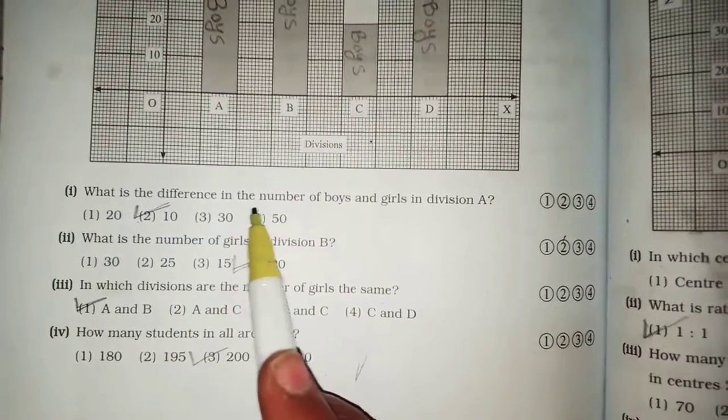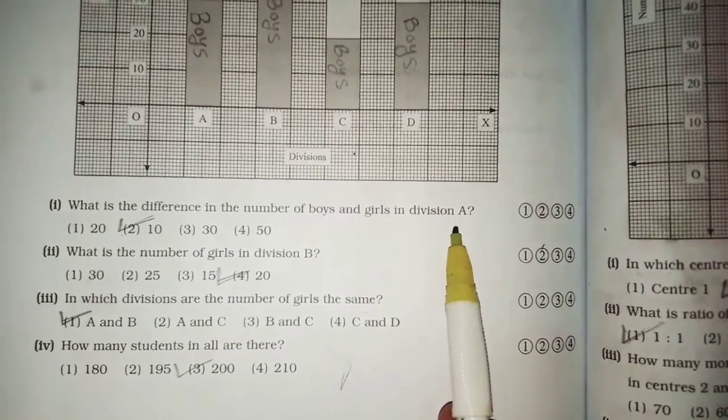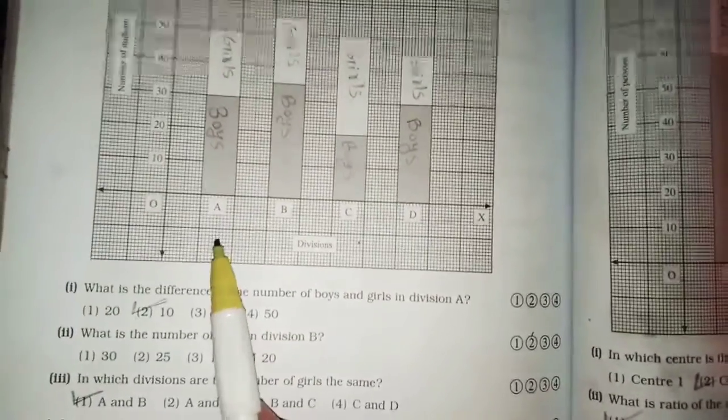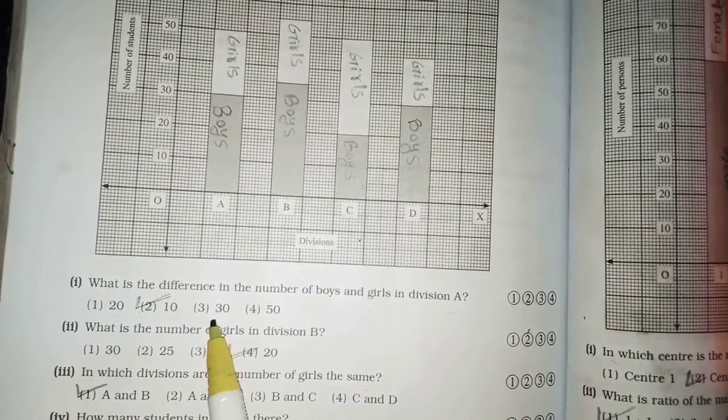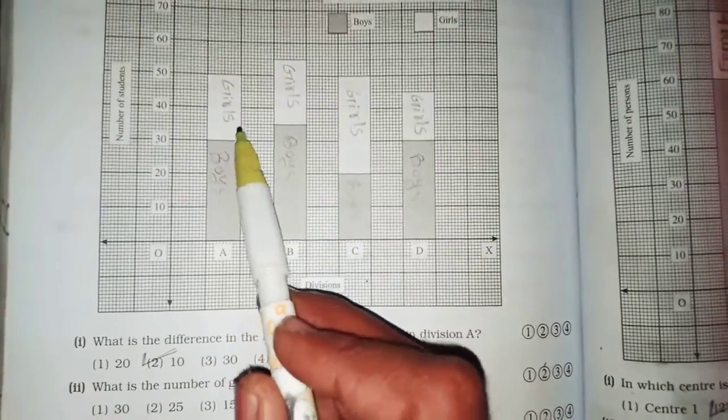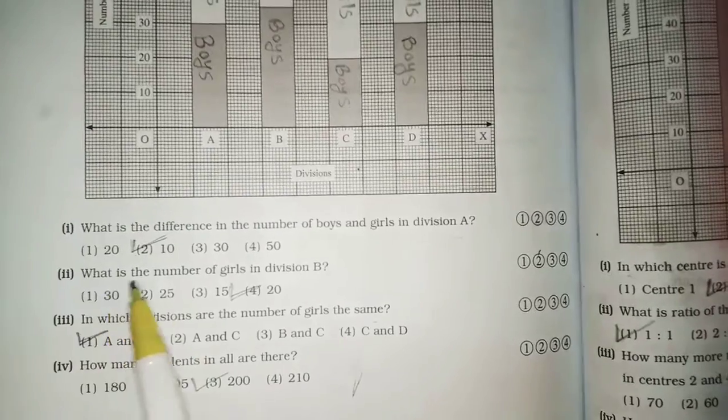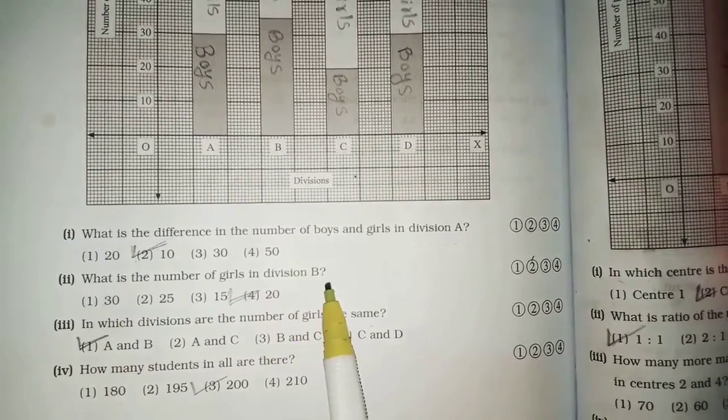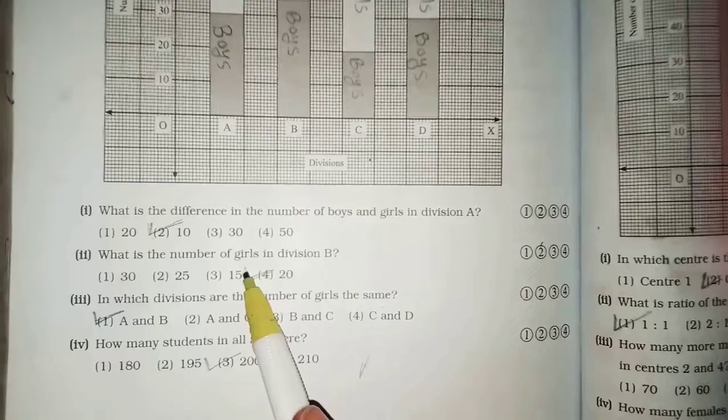What is the difference in the number of boys and girls in division? Division A में boys and girls in division B. What is the number of girls in division B? Division B में girls कितनी आहे 20 आहे 20.